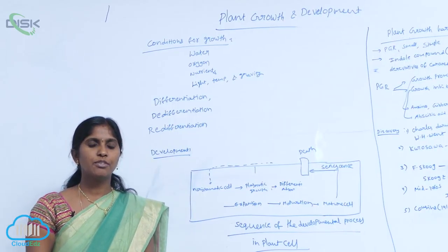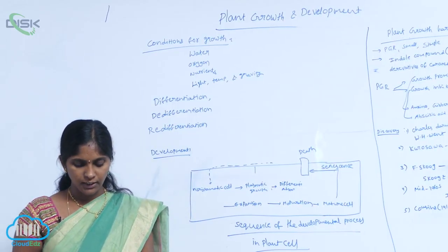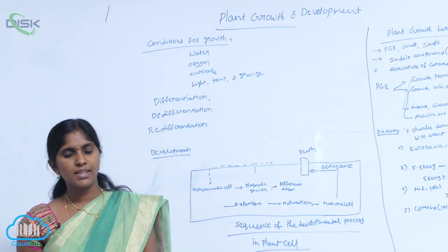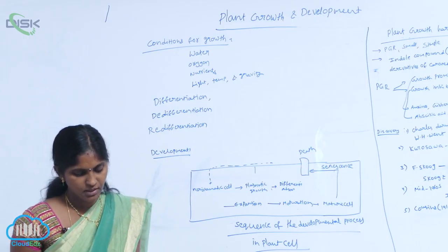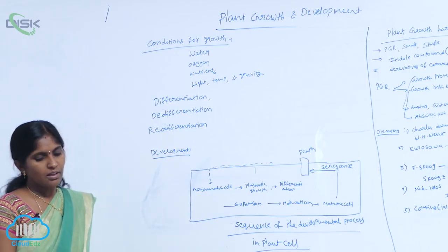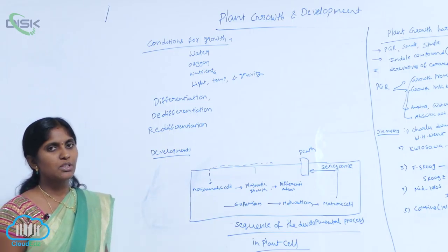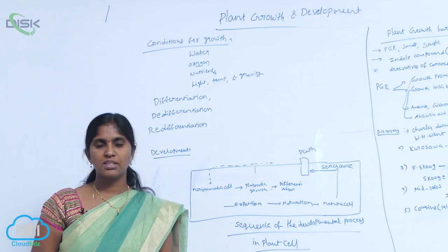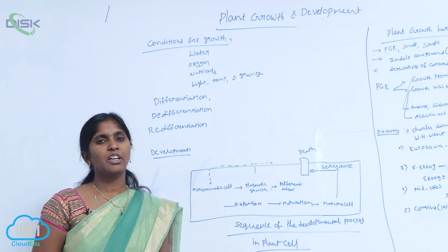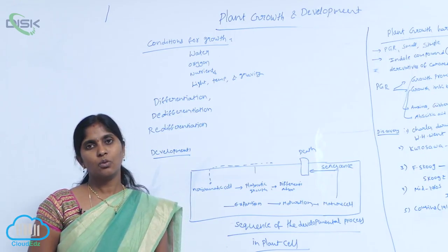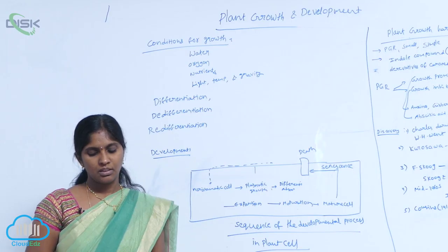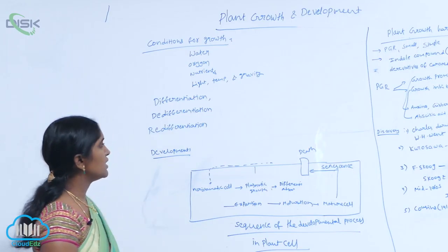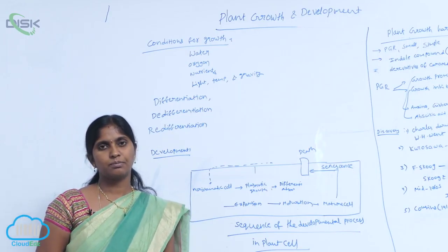Necessary conditions for growth are water, oxygen, and nutrients. The plant cell grows size-wise; it requires water, nutrients, and also oxygen.